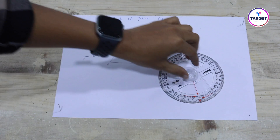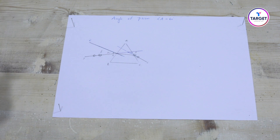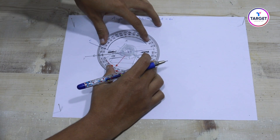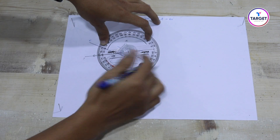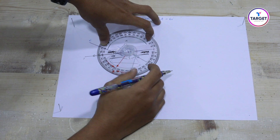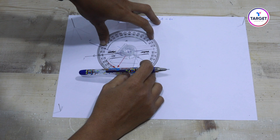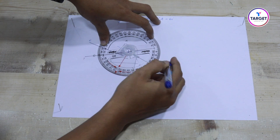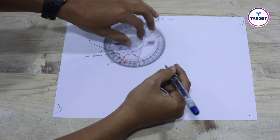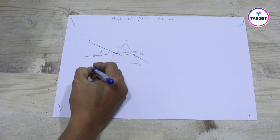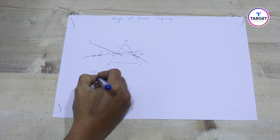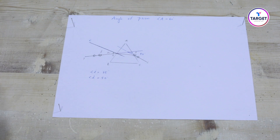We measure the angle of deviation using the protractor at the point where the extended lines coincide. Here we are getting 50 degrees. So, angle of incidence I = 35 degrees and angle of deviation D = 50 degrees.